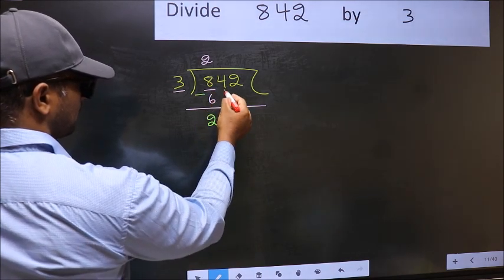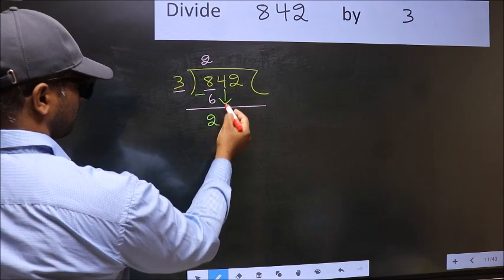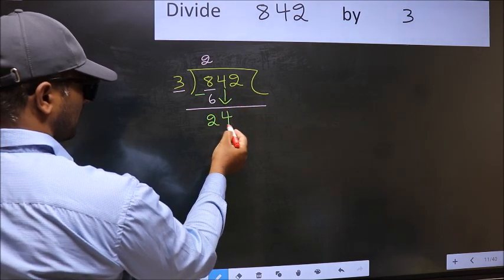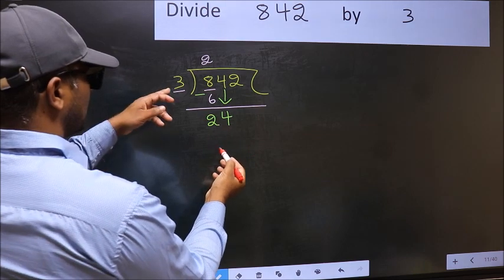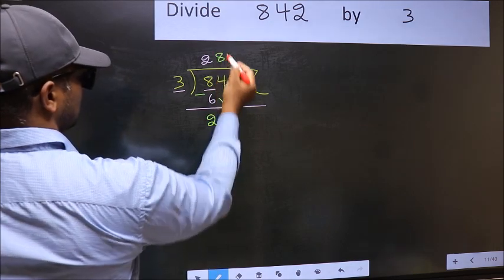After this, bring down the beside number. So 4 down. Now 24. When do we get 24 in 3 table? 3 times 8 is 24.